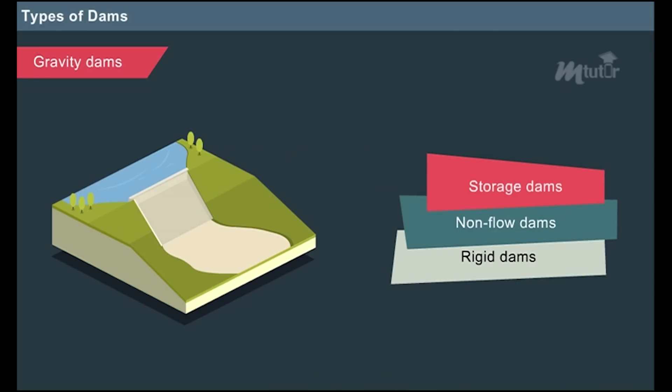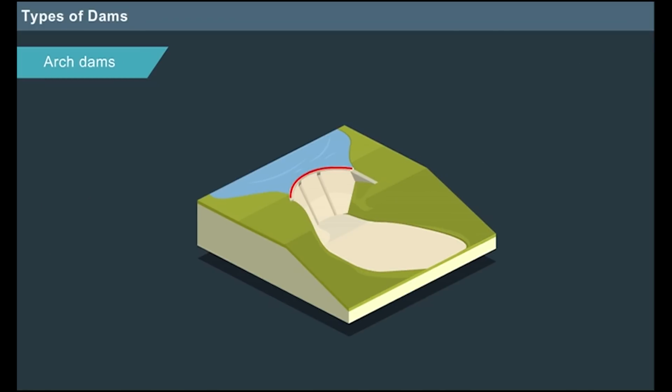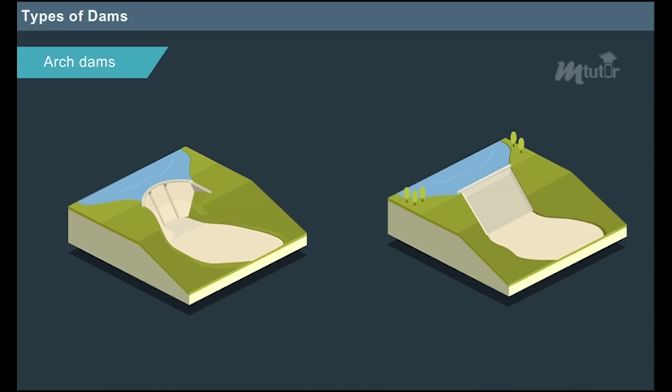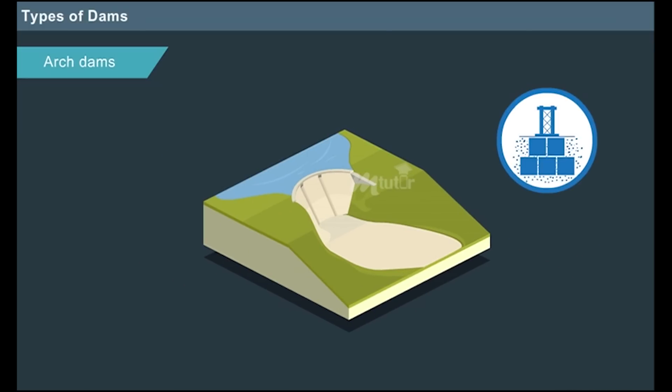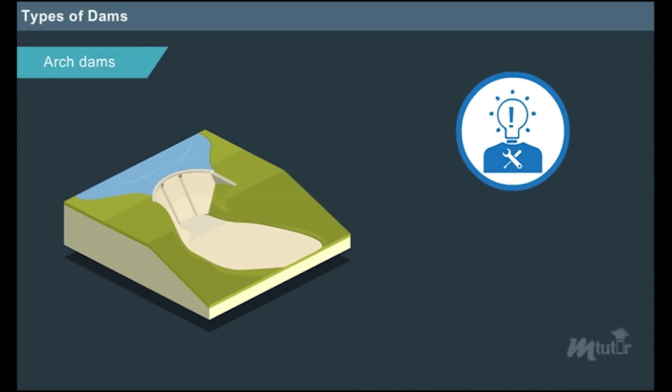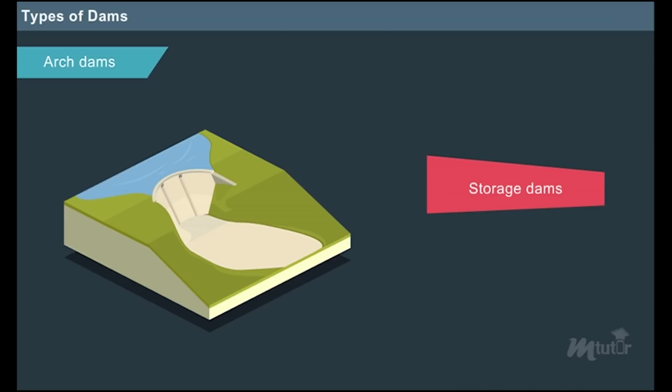Arch dams: These dams are curved in design wherein the water pressure acts horizontally to the side abutments by arch action. It is usually constructed across deep narrow valleys with smaller length and proportionate height which obviously reduces the cost of construction. The major advantage is that the section of the dam is comparatively smaller than a gravity dam. The disadvantages of arch dam is that it requires very strong bedrock to build an abutment and requires skilled labour and a sophisticated work plan. Arch dams come under the category of storage dams and rigid dams.